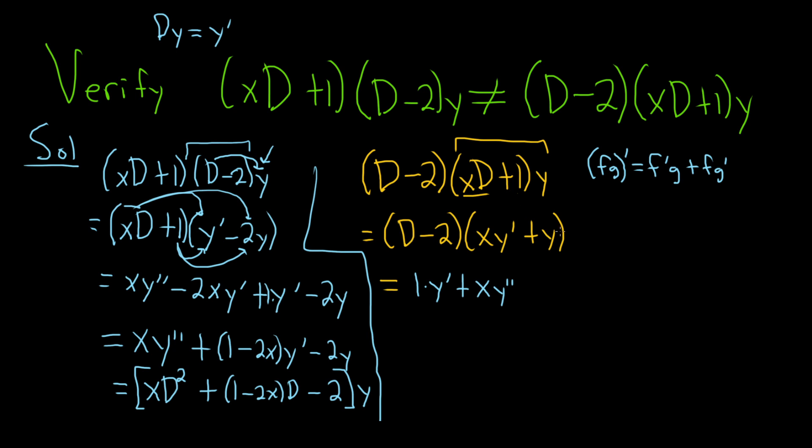Then apply big D to y. So we did it to this. Now we have to do it to this. Also, let's not forget that. It's easy to forget. So easy to mess up. Good stuff. And then now you just distribute the negative to negative 2xy prime and then negative 2y.